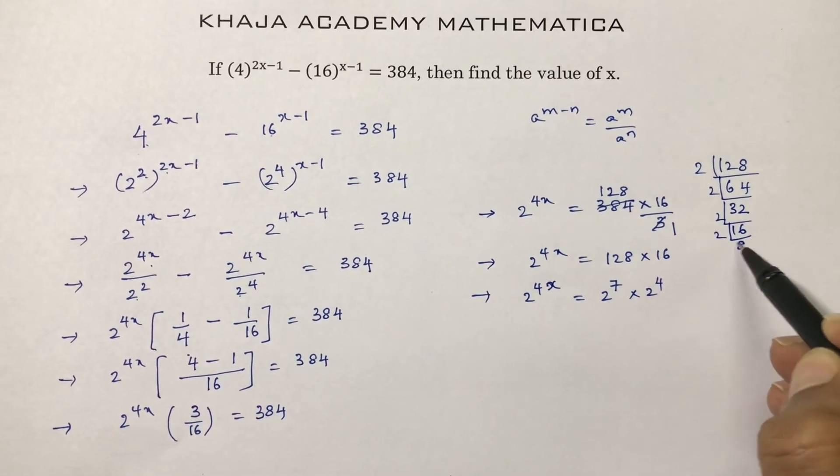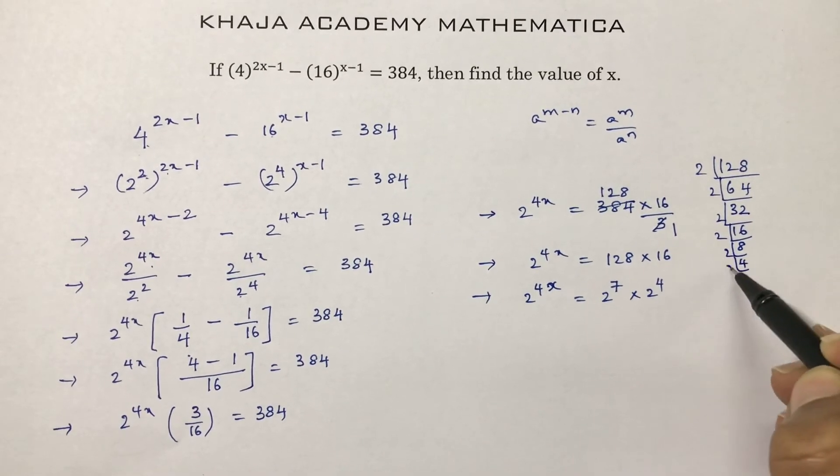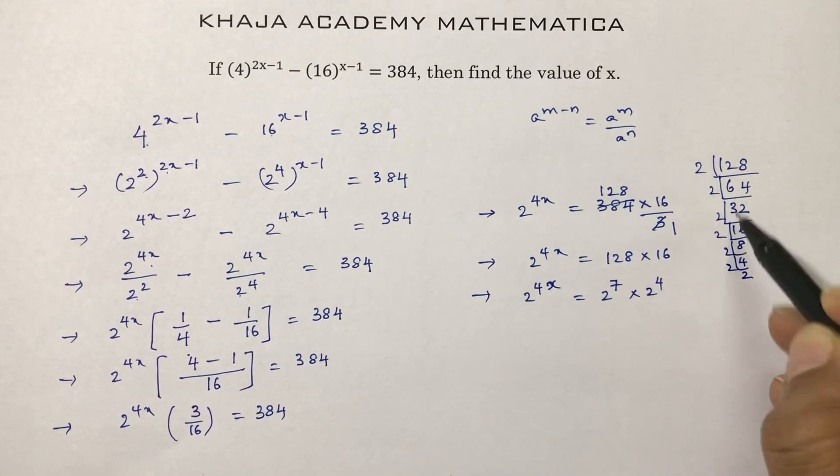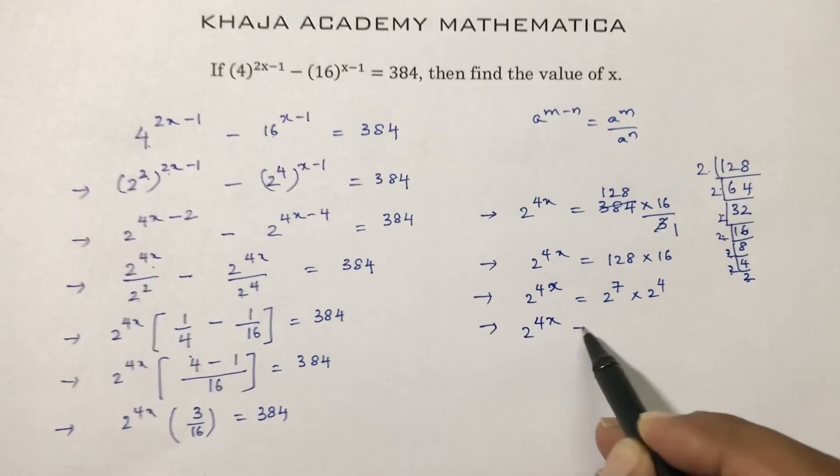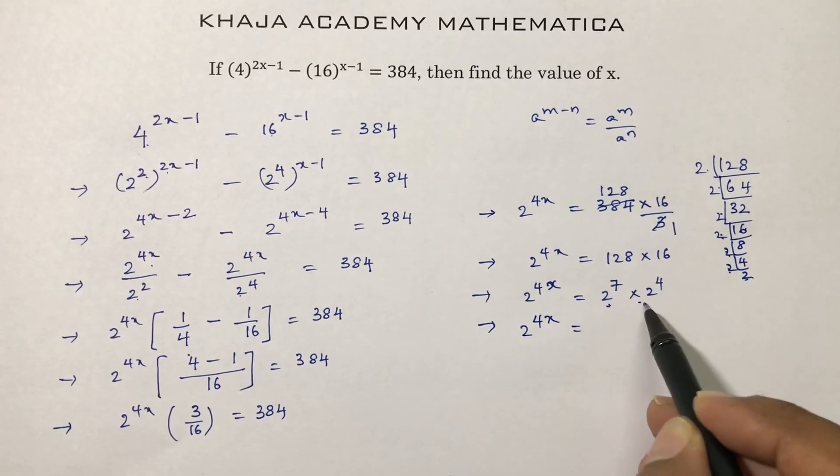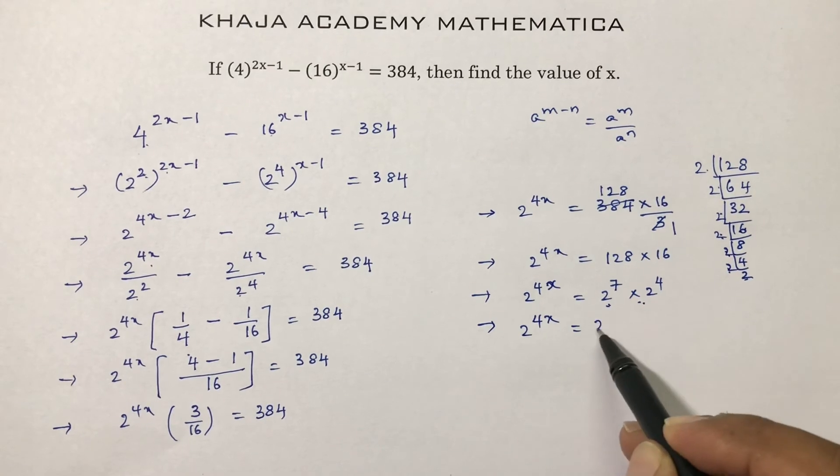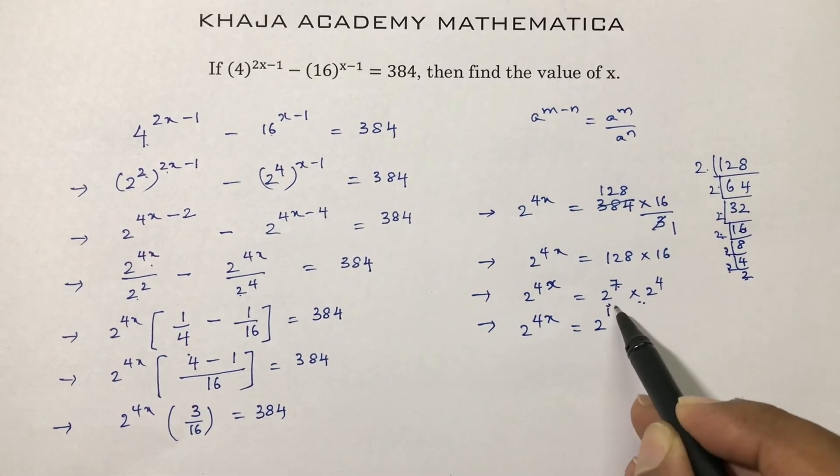2 power 4x, here bases are equal, so we can add the powers: 7 plus 4 is 11. Now bases are equal, so you can equate the powers: 4x equals 11.